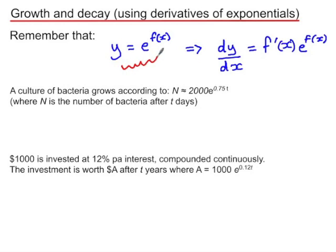So remembering that if we have y equals e to the power of f(x), then differentiating y with respect to x gives the derivative of f(x) multiplied by the original exponential function, e to the power of f(x). We'll come back to that in a moment.